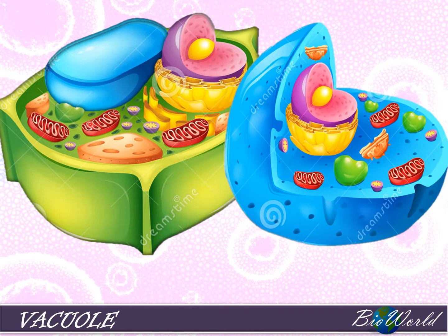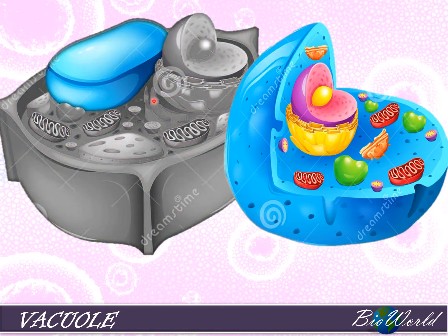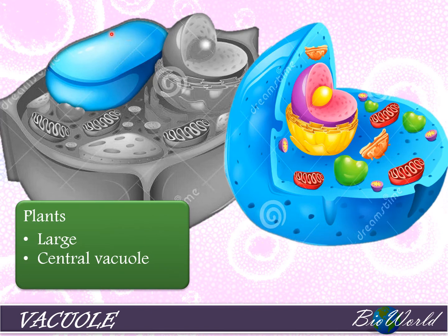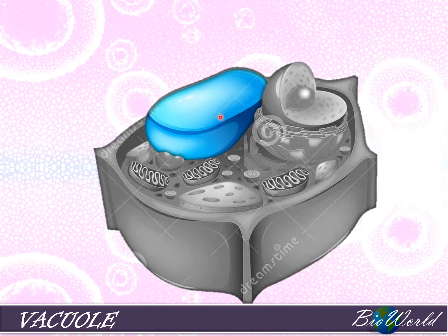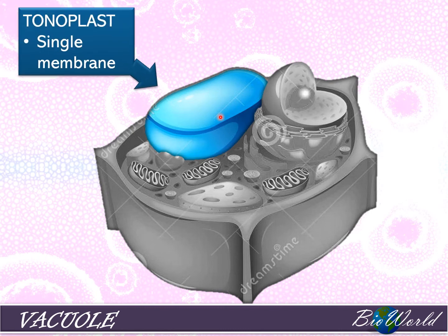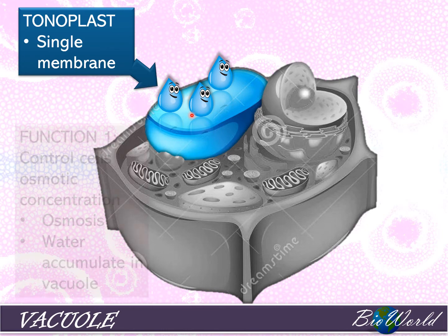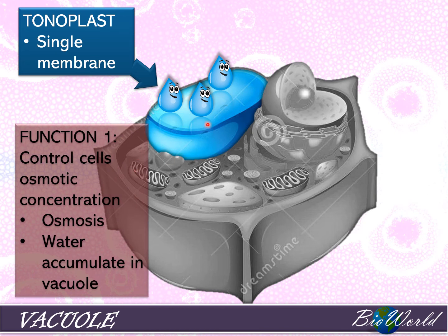We move on now to another organelle which is most visible in plant cells — that is the vacuole. In plant cells, the vacuole is large and centrally located, causing most of the organelles to be pushed to the side. In animal cells, there are vacuoles too, but since they are small and many, they are called vesicles. The plant vacuole is made up of a membrane known as the tonoplast, which is a single membrane permeable to water, so water can diffuse in by osmosis and accumulate within the vacuole. This enables the vacuole to carry out its first function: to control the cell's osmotic concentration.